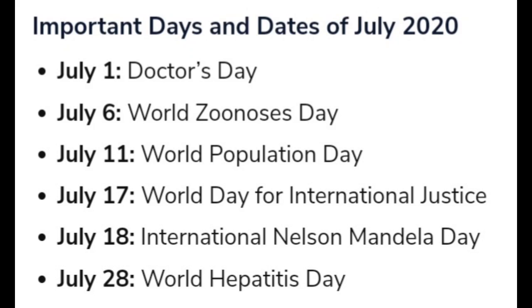Important dates of July 2020: July 1st - Doctors Day. July 6th - World Zoonoses Day. July 11th - World Population Day. July 17th - World Day for International Justice.